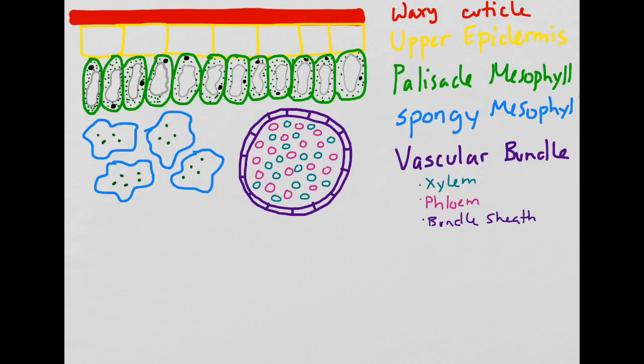Now we're going to move on to drawing the lower layers of the leaf, and some of these will look pretty familiar. Just underneath the vascular bundle and the spongy mesophyll is another layer of epidermis. However, this is called the lower epidermis because it's on the lowest part of the leaf. Just like the upper epidermis, the lower epidermis has cells that are packed very closely together in order to prevent water loss.